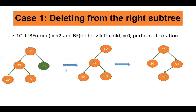Subcase 3: deleting 70 from the right subtree. After deleting, balance factor of node 50 is +2 and balance factor of node's left child 35 is 0 — because 35 has both left and right children making its balance factor +1 minus 1 equals 0. Carry out left-left rotation. 35 becomes the new root, and 35's right child becomes 50's left child.